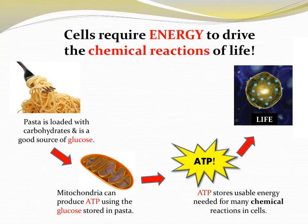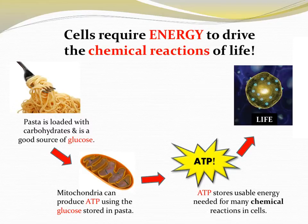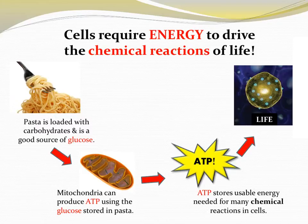Let's examine that more closely. Cells require energy to drive the chemical reactions of life. Let's look at pasta — pasta is loaded with carbohydrates and therefore is a great source for glucose. The mitochondria in your cells use that glucose to produce the molecule ATP. ATP is an energy-storing molecule, usable energy, and that energy from ATP is used to drive the chemical reactions that keep cells alive.